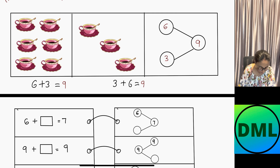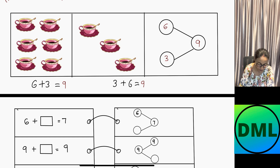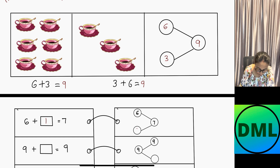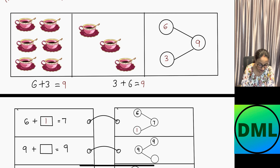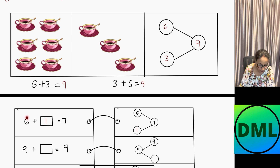Let's see the next example: 6 plus blank equals 7. I have to make 7 and I already have 6, so 6 plus 1 equals 7. I need to write down 1 as the answer. In another way, you can say that 7 minus 6 equals 1 — you can do subtraction to get the answer. Moving 6 to the right-hand side, it becomes negative, so 7 minus 6 gives you 1.